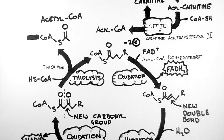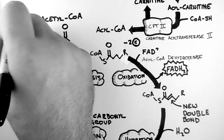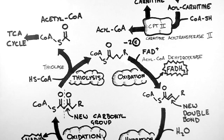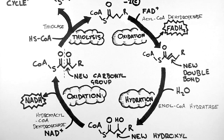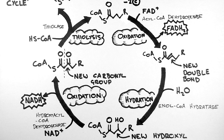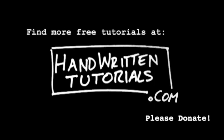The acetyl-CoAs which we have created can then head off to the TCA cycle, also known as the Krebs cycle, for even more energy production. You can see that a 16-carbon fatty acid, like palmitic acid, can create quite a lot of energy, as it creates eight acetyl-CoAs for the TCA cycle. Compare that with the two that a glucose molecule creates — this is part of the reason that fats are so energy dense. In the next tutorial, we'll be having a look at the electron transport chain, also known as oxidative phosphorylation.